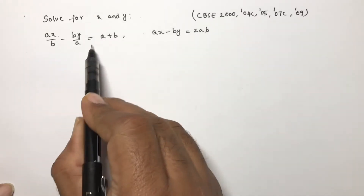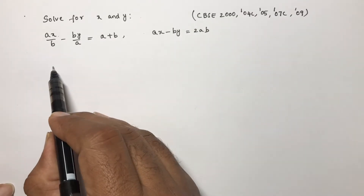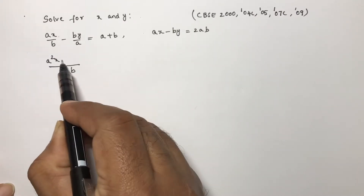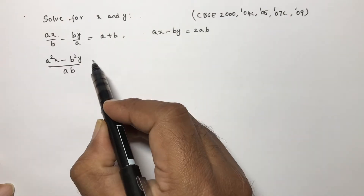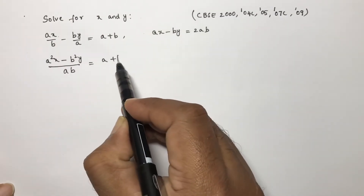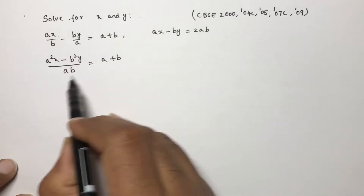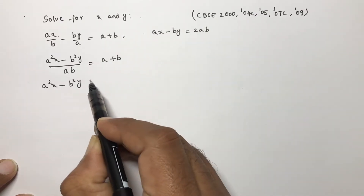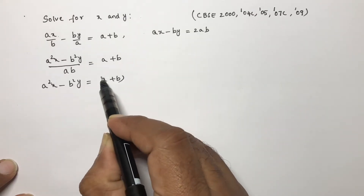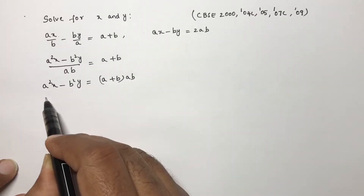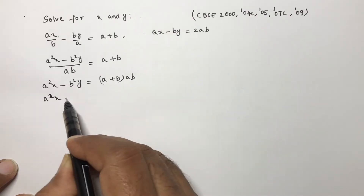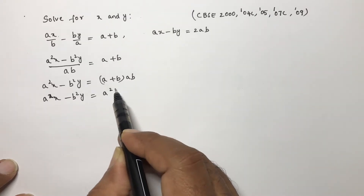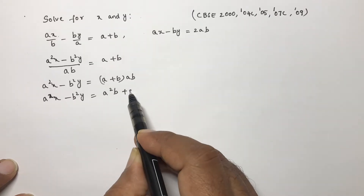For the first equation, take LCM which is ab. Multiplying through, it becomes a squared x minus b squared y equals a plus b into ab. Expanding: a into ab gives a squared b, and b into ab gives ab squared.